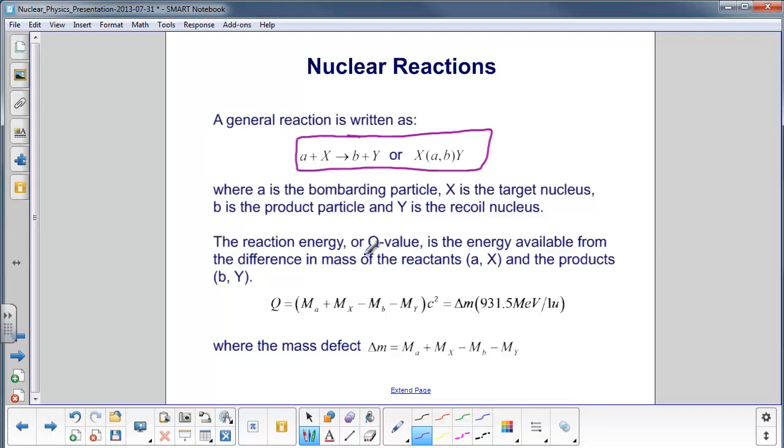Let's define a reaction energy or Q value. Q value is the energy available from the difference in mass of the reactants and the products. For example, the mass here can either be less than the total mass here or greater than. And depending on whether it's less than or greater will tell you whether it's releasing energy or it's taking energy in.